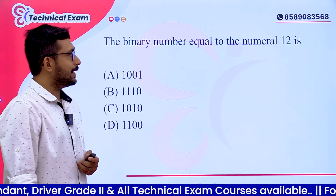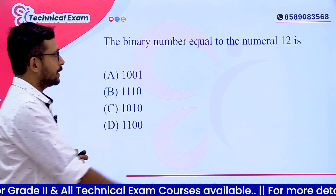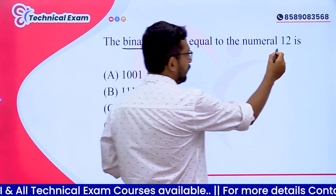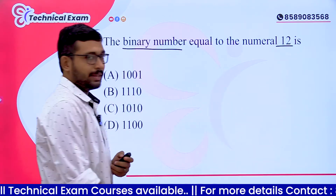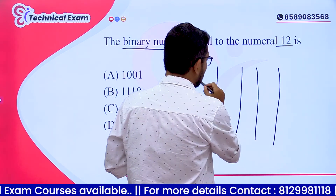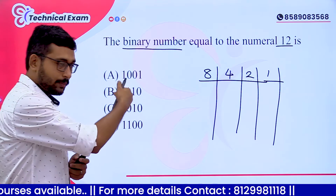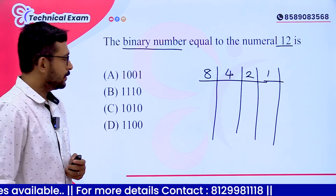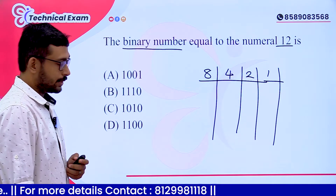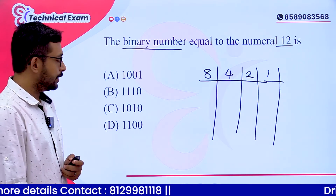The least count of vernier caliper question. Also: binary number representation. Options shown are A. 0100, B. 1110, C. 1010, D. 1100. We need to write the number 12 in binary.